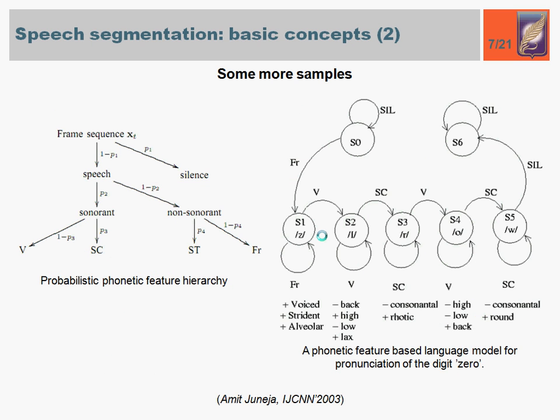On this slide, you can see samples of different models. On the left-hand side, a probabilistic phonetic feature hierarchy based model is presented. This model looks like a tree in which each phonetic feature is connected with an individual probability of its occurrence. On the right-hand side, you can see a phonetic feature based language model for pronunciation of the digit 0.